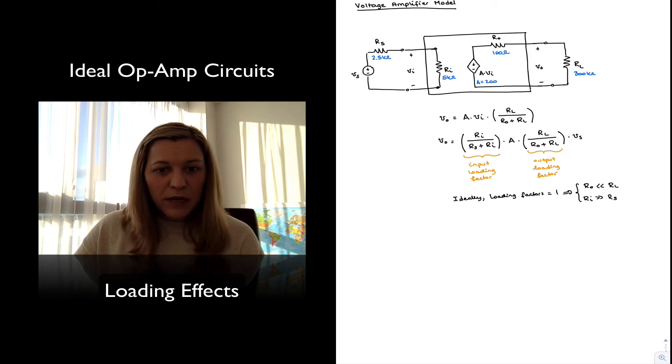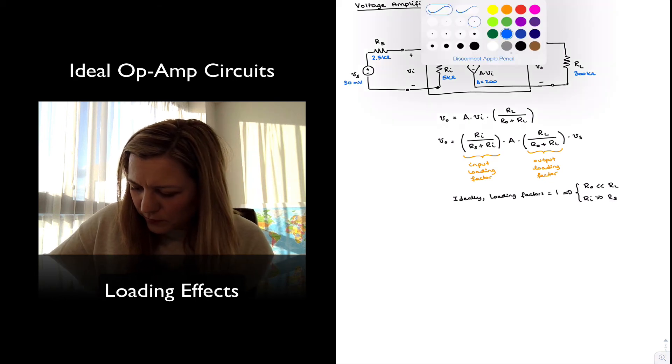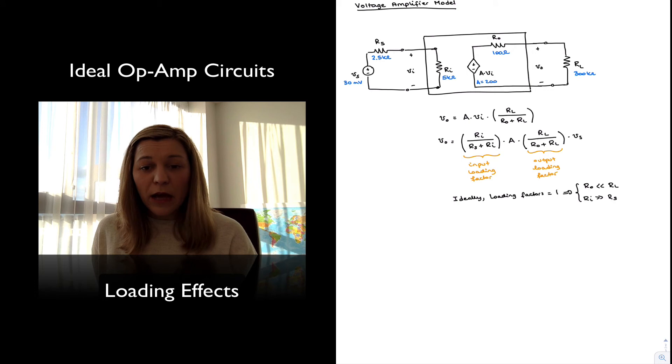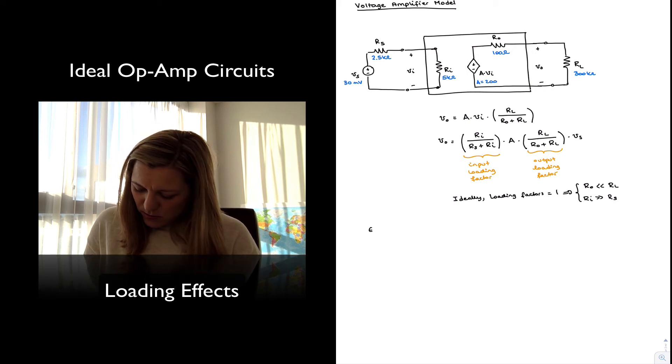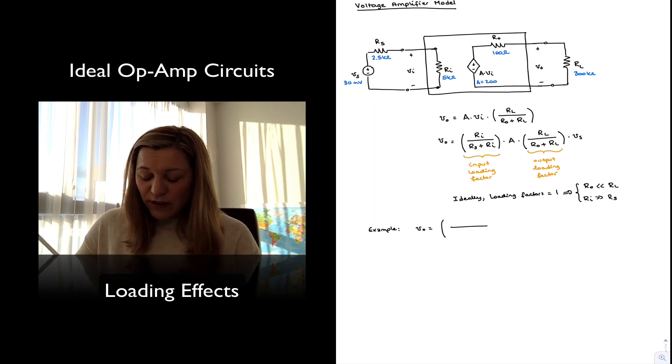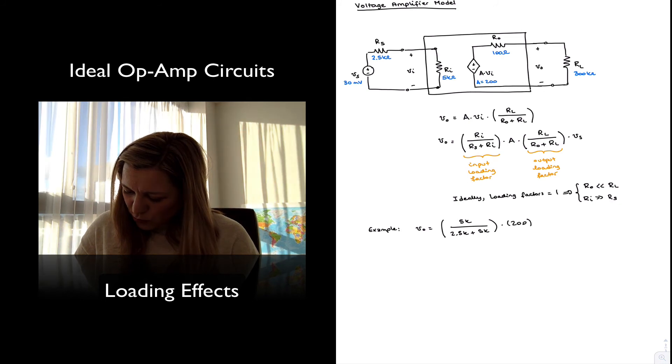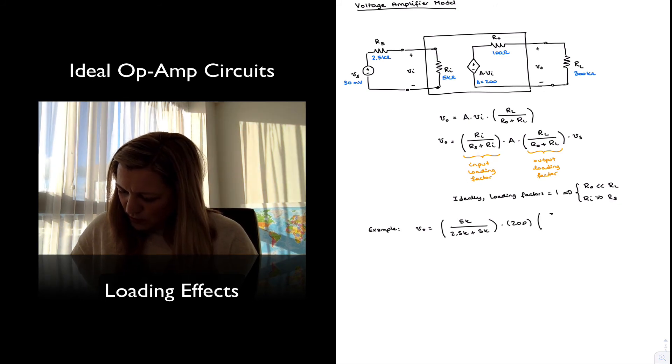Let's imagine my signal source, my value of input signal is 30 millivolts in amplitude, and what will be my output signal? Well, in this example, my V_out is going to be equal to, the loading factor for the input is 5k divided by 2.5k plus 5k, times the nominal gain which is 200, times the output loading factor which is 300k divided by 100 plus 300k, times VS which is 30 millivolts.